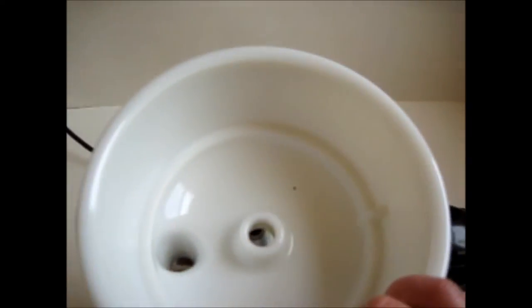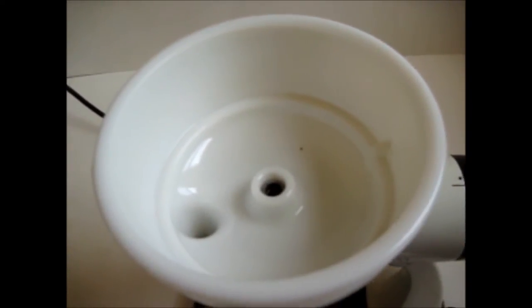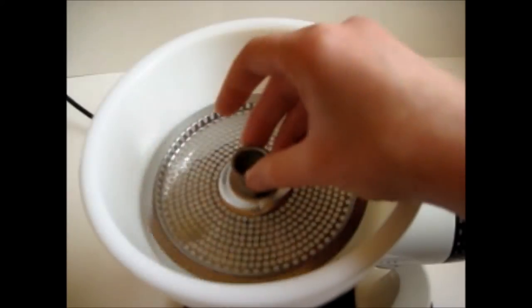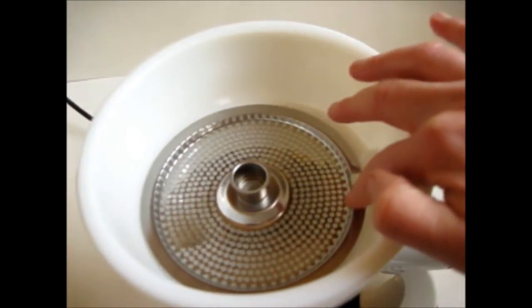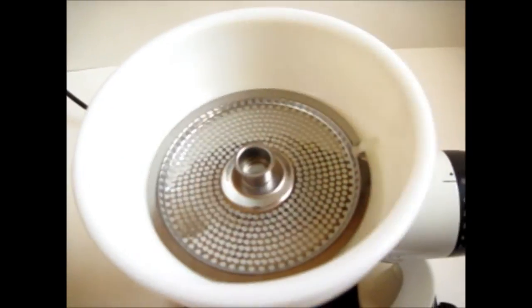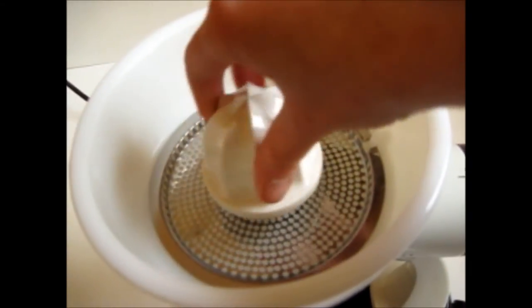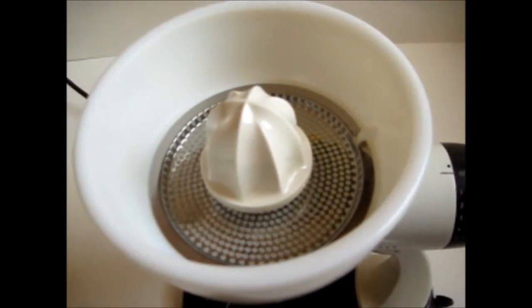Attach the juicer. You're just going to set this onto there like that. Put the metal screen on. You have to align it. There's a glass tab. You have to align it like this. And then set the reamer in and just push it around until it goes all the way in.